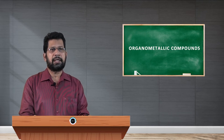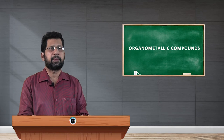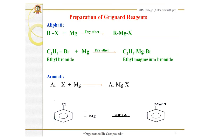Now let me explain the preparation of Grignard reagents. The Grignard reagent may be aliphatic or aromatic in nature. The general equation for aliphatic Grignard reagents: RX, an alkyl halide, is treated with magnesium metal in dry ether. For example, ethyl bromide is treated with magnesium in dry ether to give ethyl magnesium bromide.